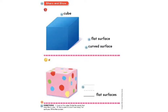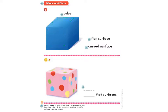Now we are going to look at the cube and circle the words that describe a cube. This first one right here says flat surface. Does a cube have a flat surface? Can you stack something on top of it? Yes. As we said earlier, a cube does have flat surfaces. So I'm going to circle flat surface. The next one at the bottom says curved surface. Does a cube have a curve? It does not. So we're going to leave that blank.